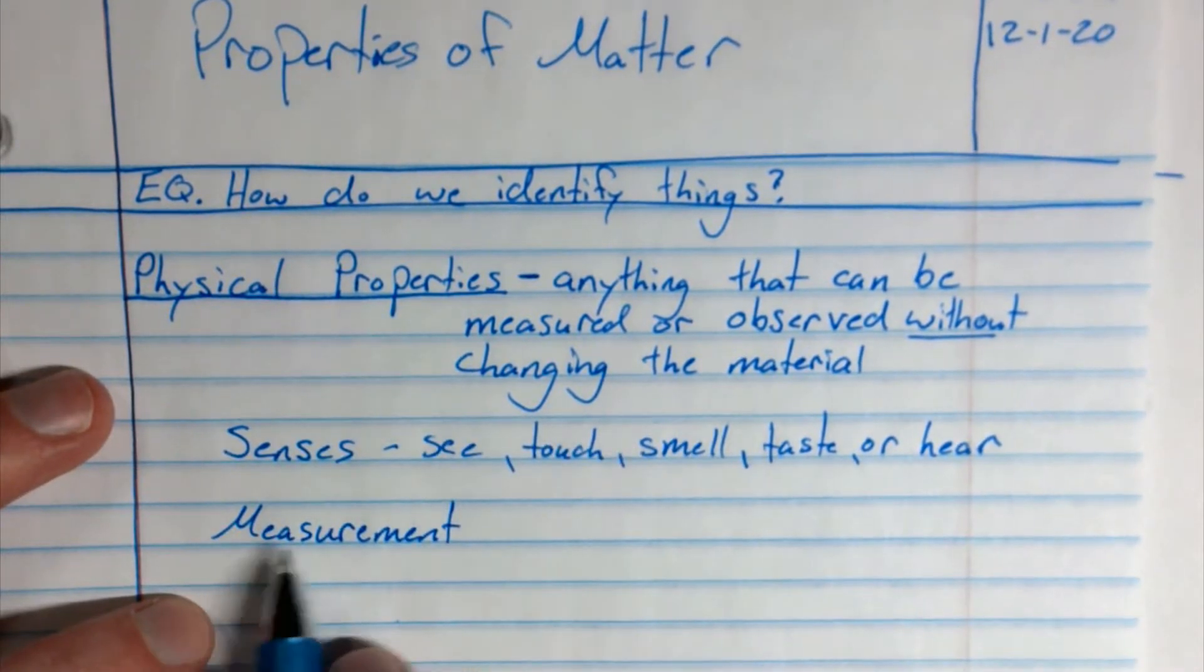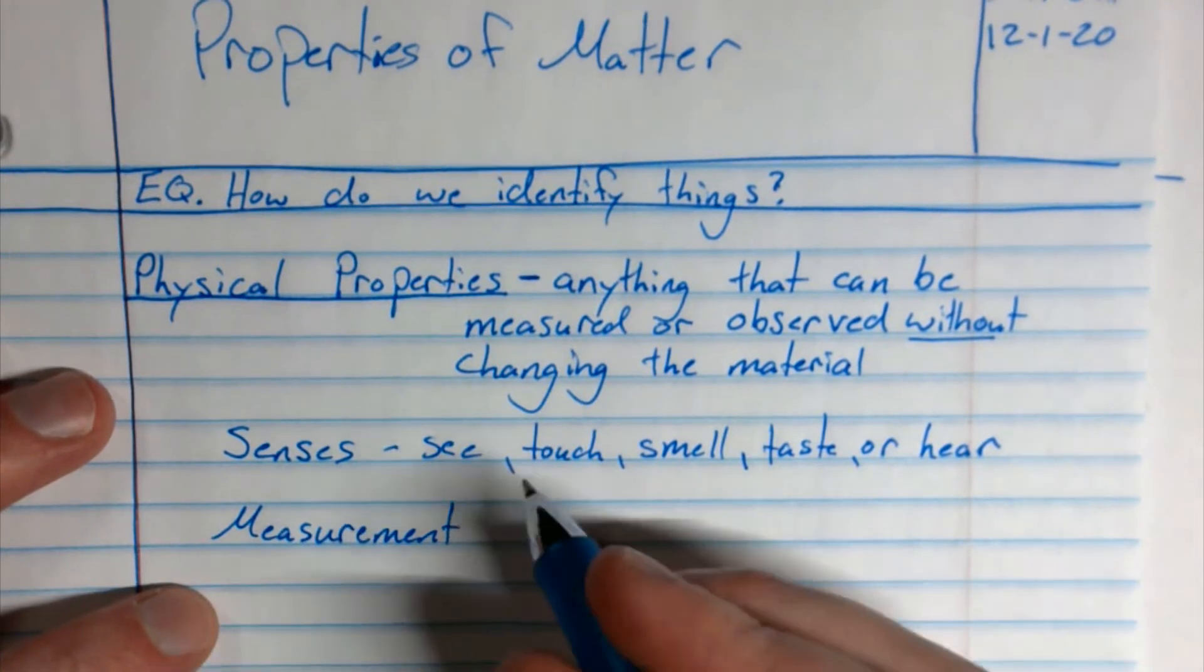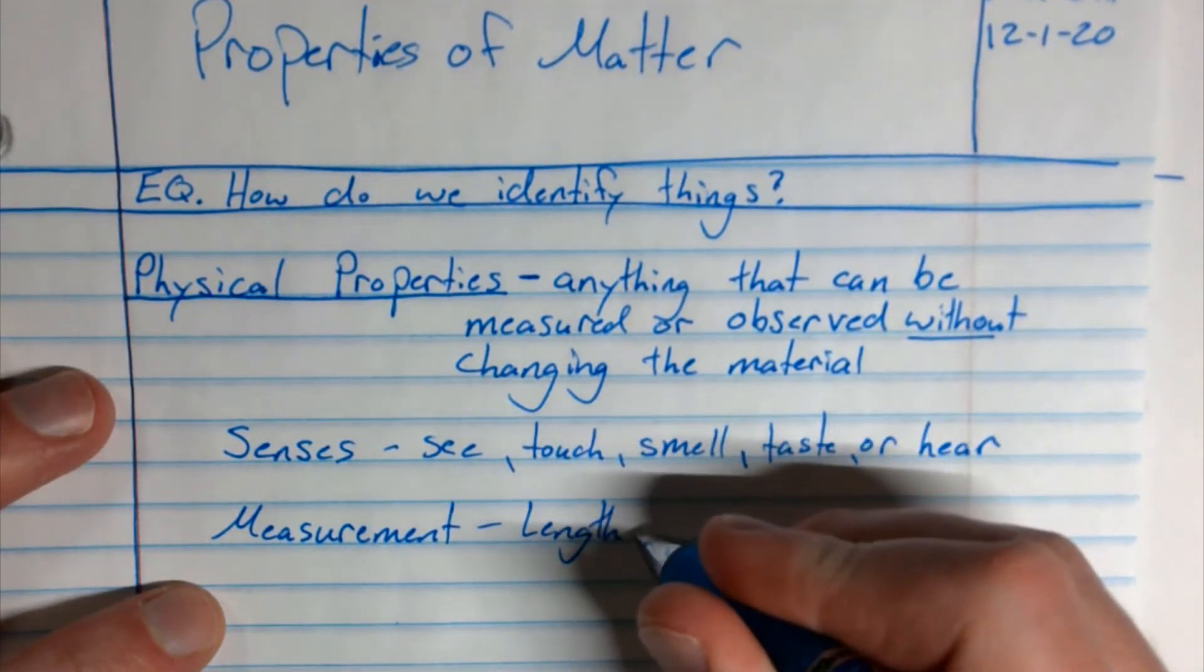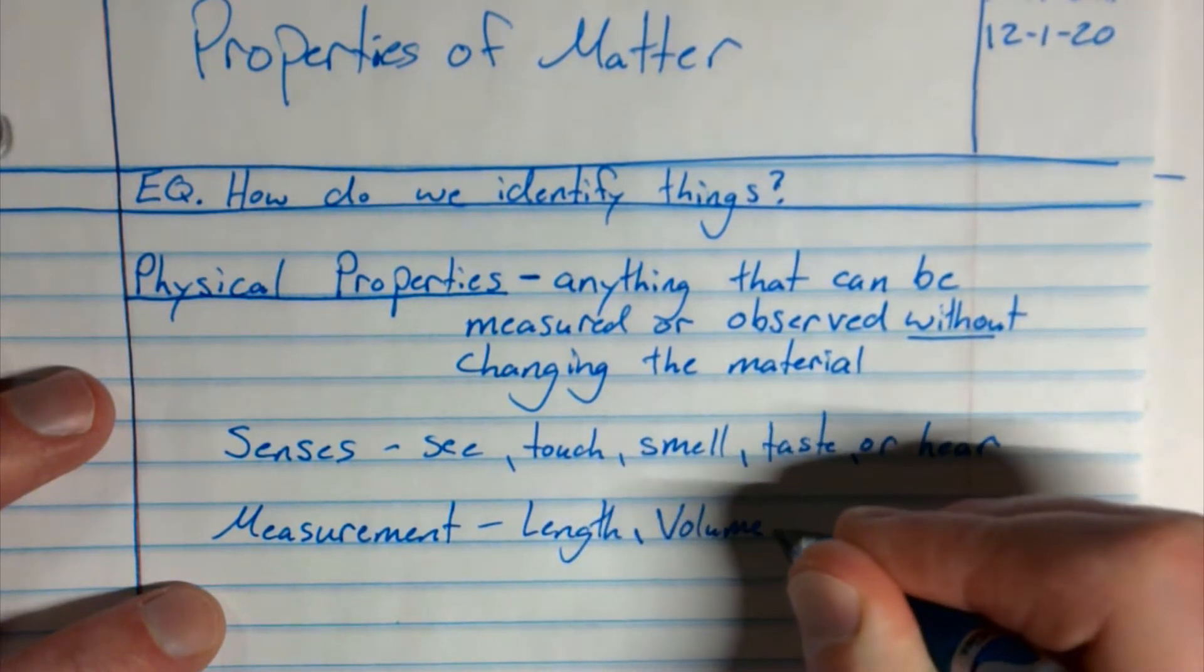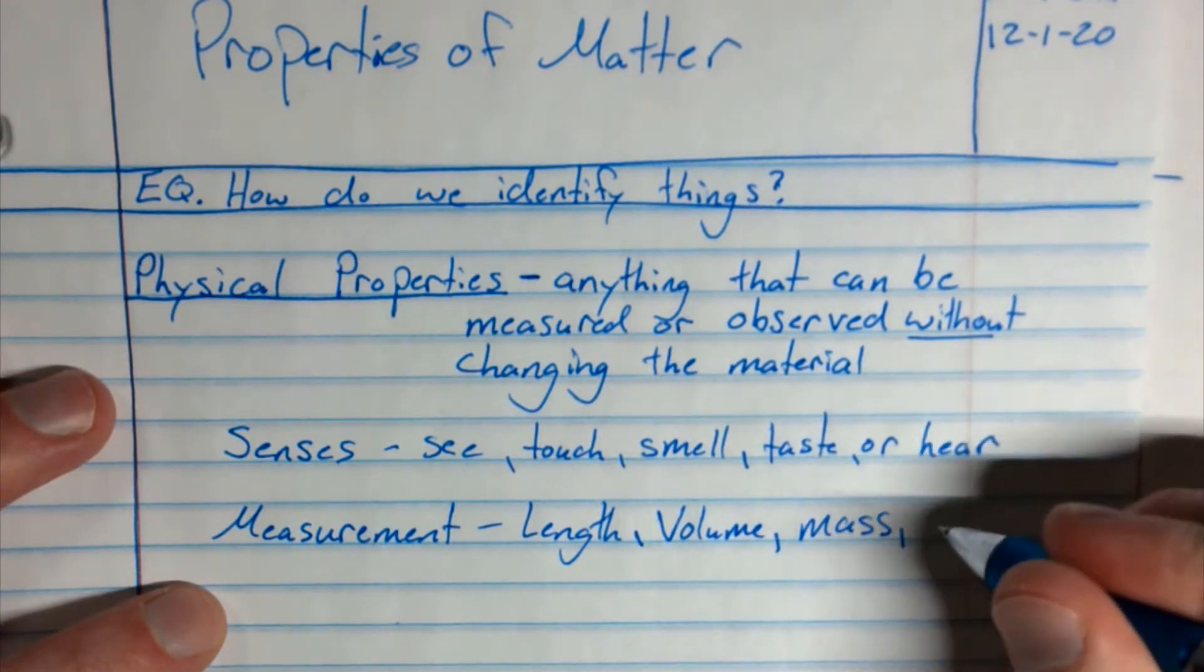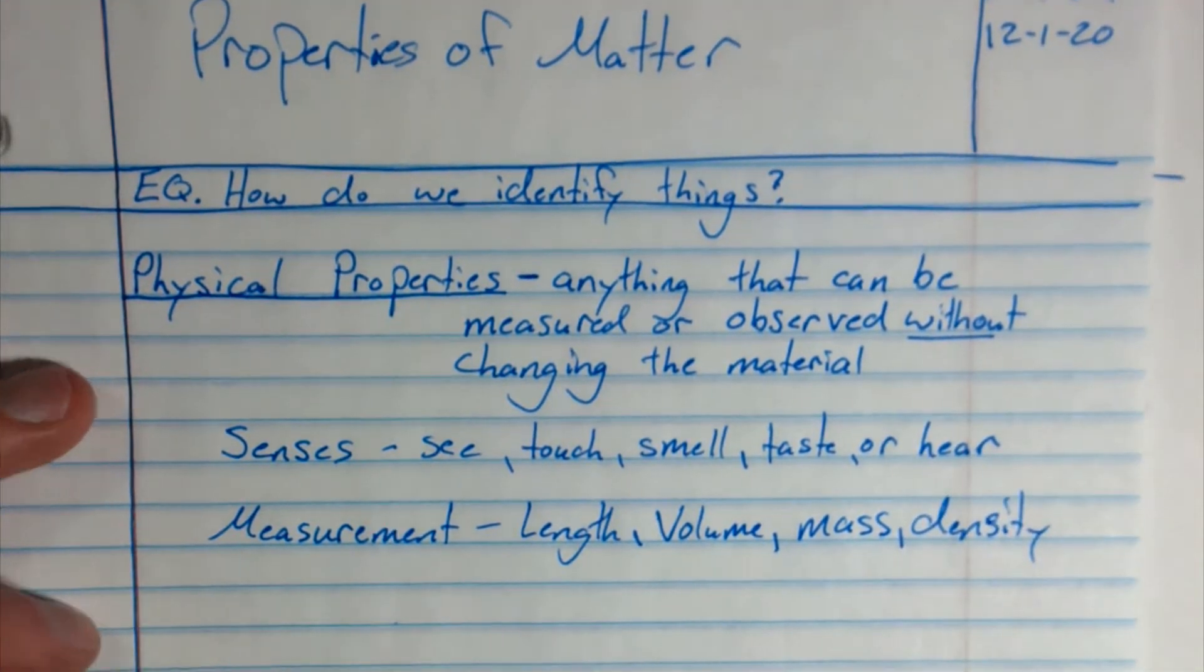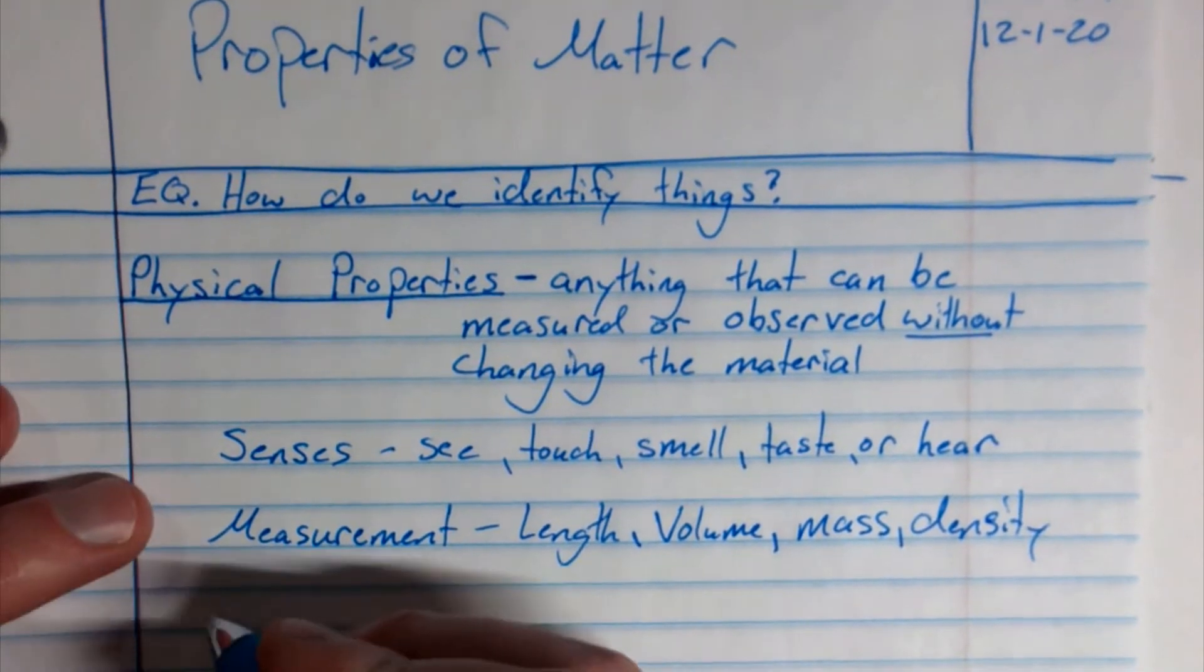So if I were to tap a glass versus plastic they're a different sound from each other and so I might be able to determine what some of those physical properties are. Another way besides senses is measurement. By doing a measurement I can also get some properties. So I could find the length of something or the volume, the mass, and most importantly the density. That tells me a lot of information.